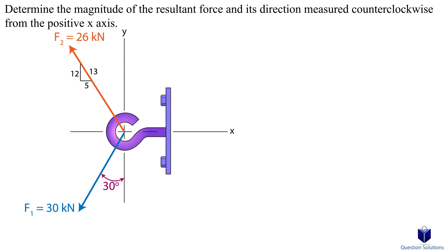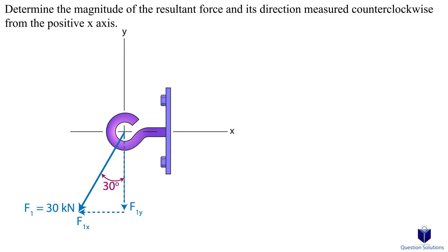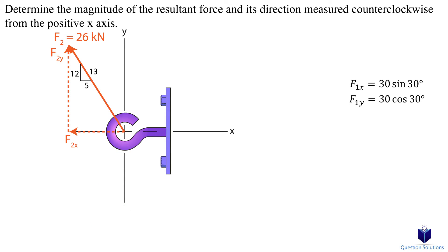Let's take a look at this next problem where we have to find the resultant force and the angle. As before, we draw the components and move them to form triangles. For force F1, the x component is opposite to the angle so we use sine, and the y component is adjacent so we use cosine. For force F2, we aren't given an angle — instead we're given a slope triangle. The key is to realize this slope triangle is similar to the right angle triangle we drew, so we use the ratios given. For the x component we use 5 over 13.